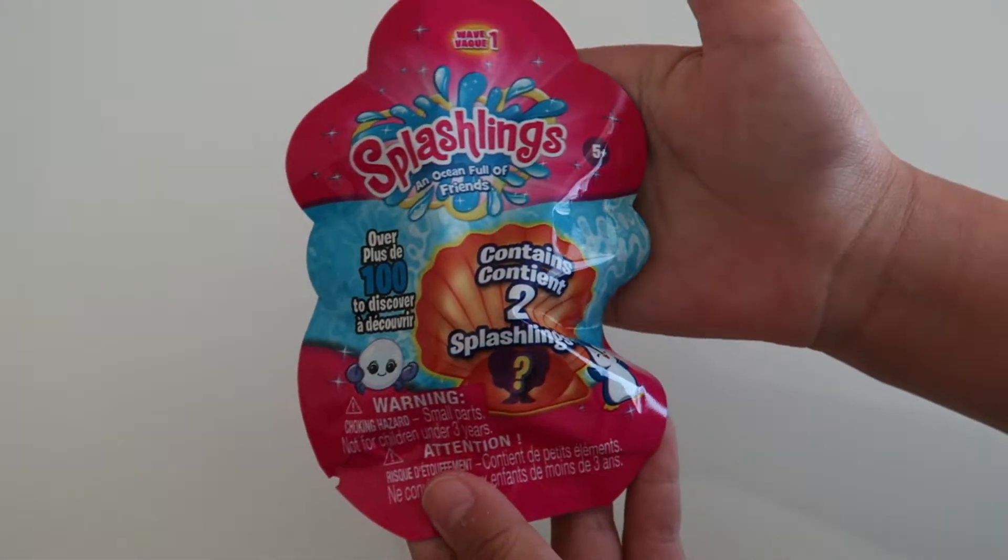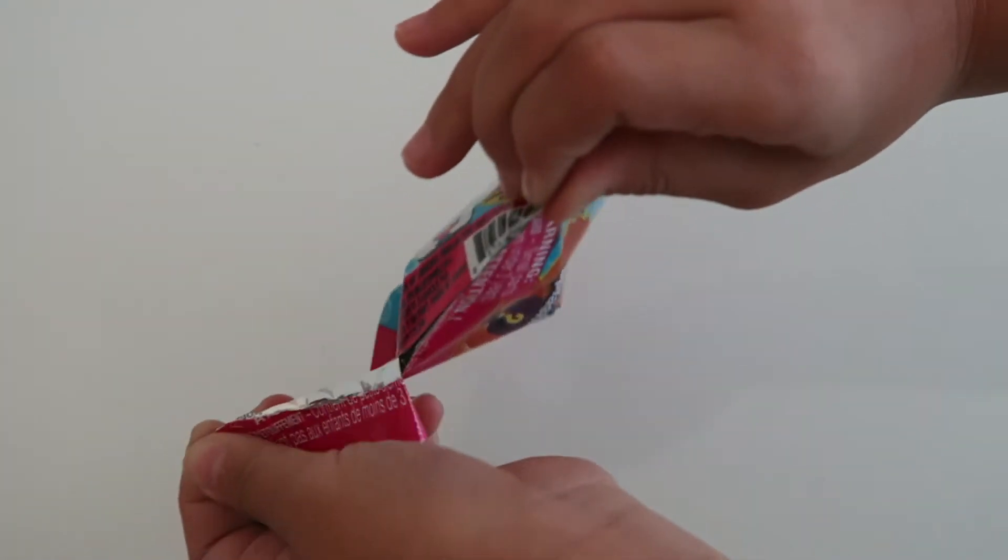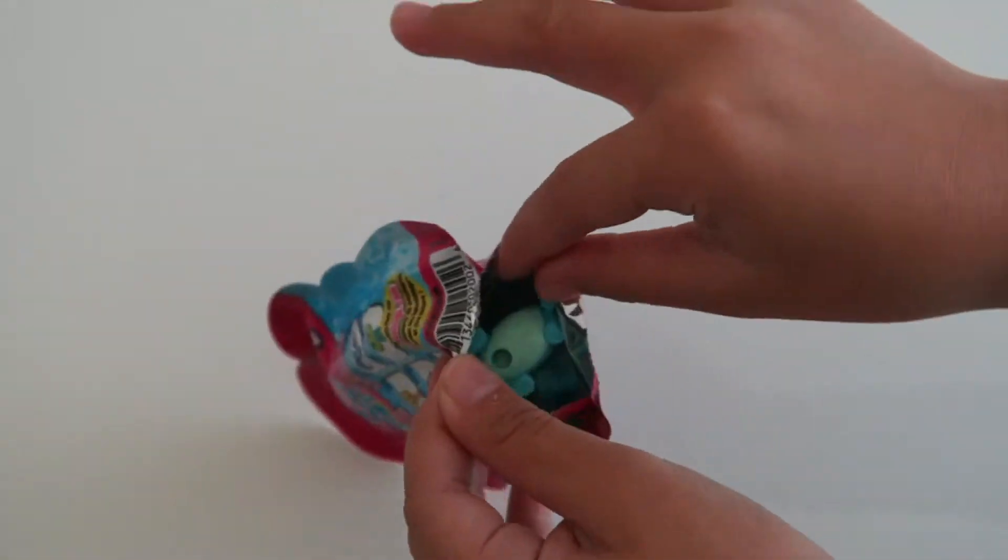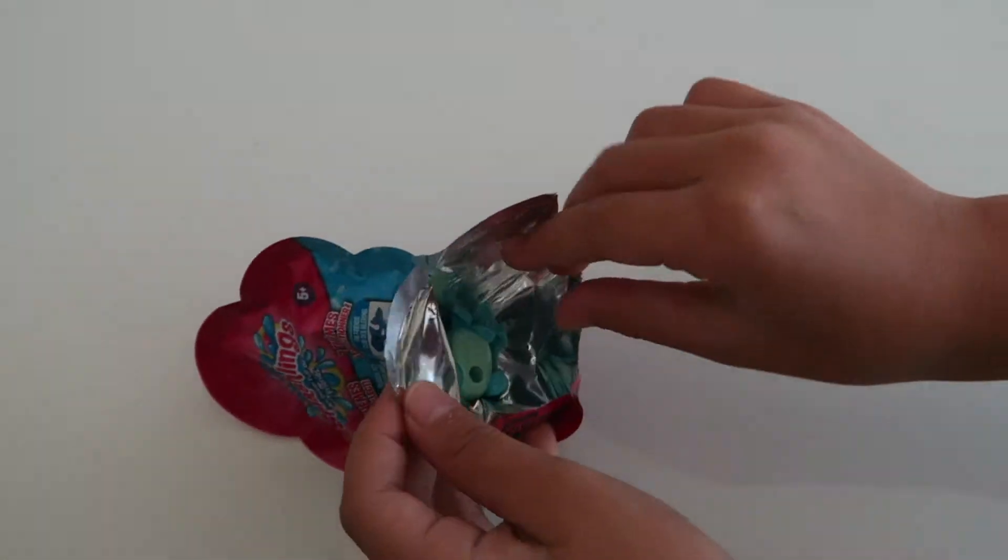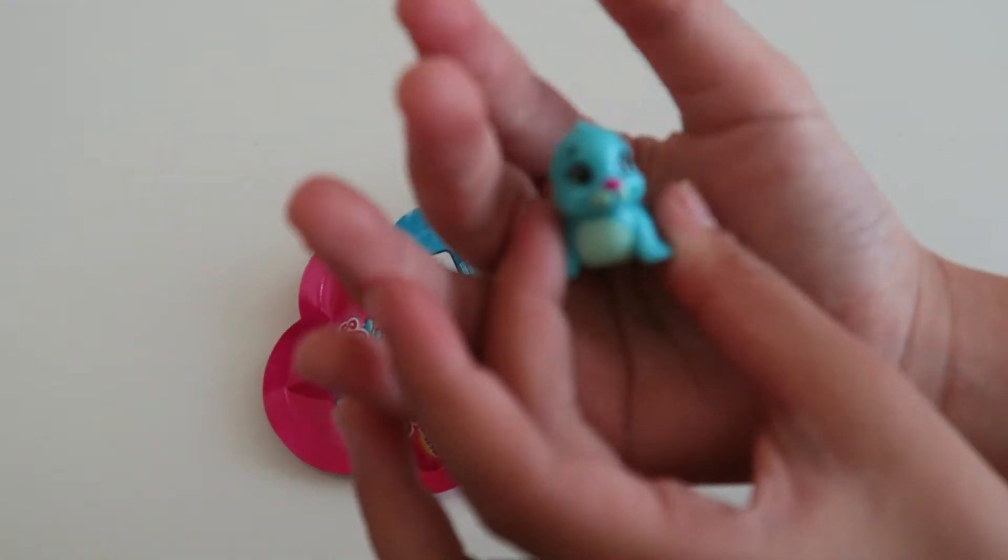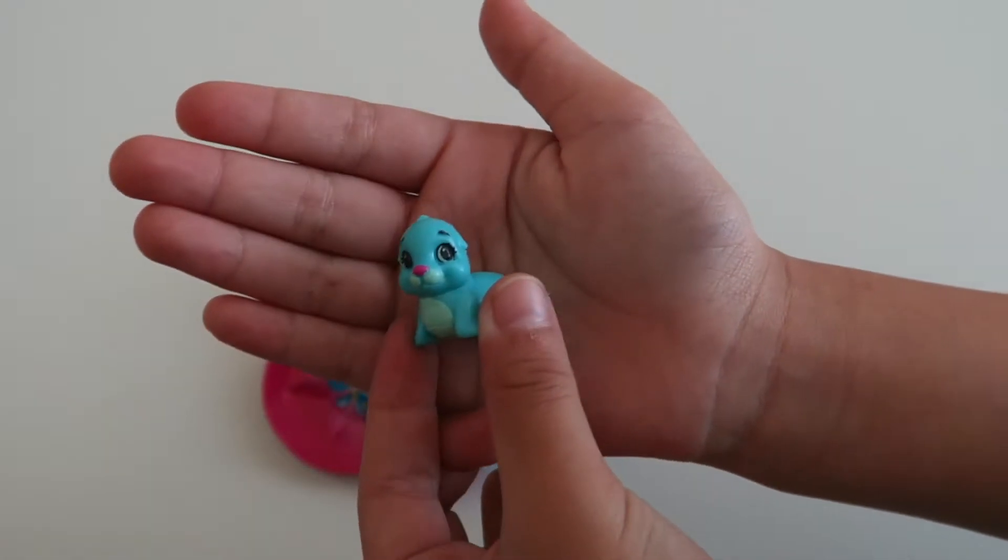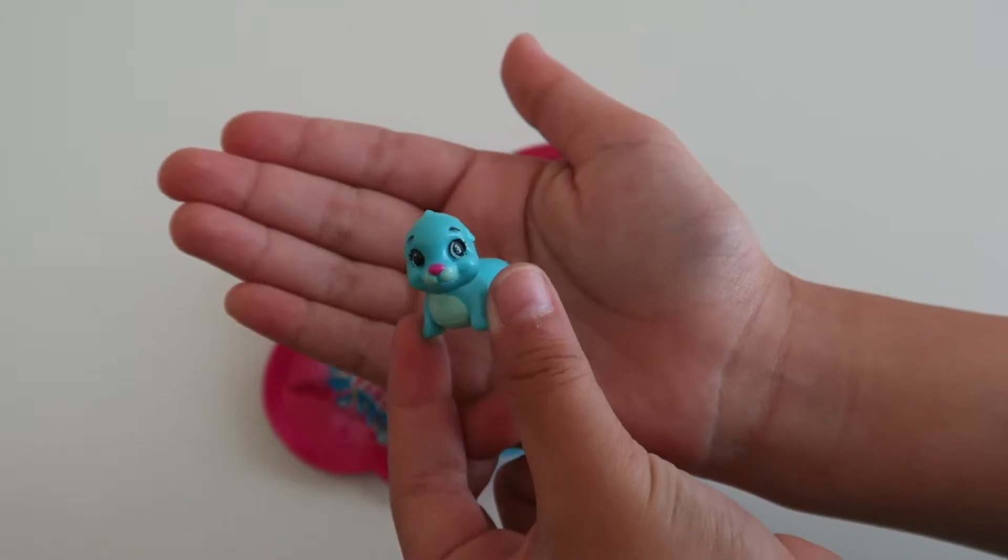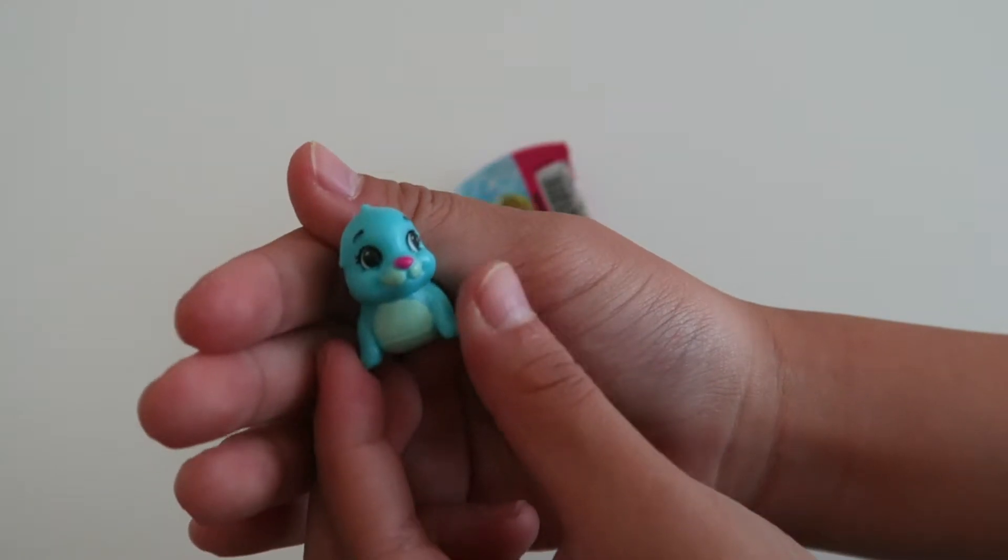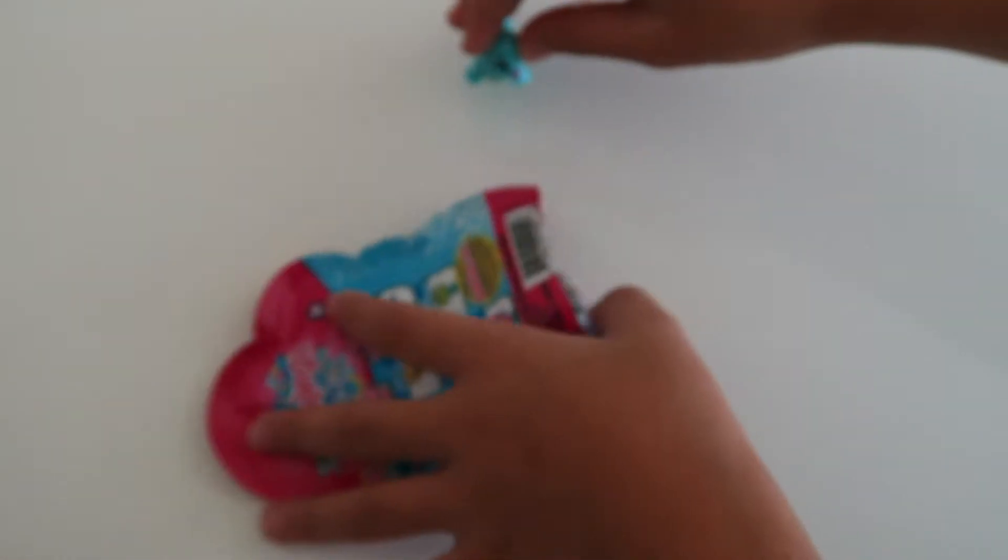It's my turn to open up my second blind bag. Let's see who we get. Oh my god, it's like a little seal. His name is Sir Claps-a-Lot. He is a common and he is from the hip flips section. Oh my god, he is so cute. He is really cute.